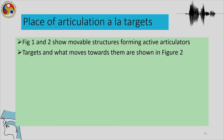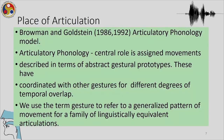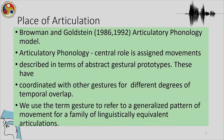Figures 1 and 2 show the movable structures forming active articulators and the target regions towards which they move. Now we want to present briefly the articulatory phonology model by Browman and Goldstein. In articulatory phonology, the central role is assigned to movements, described in terms of abstract gestural prototypes, which coordinate with other gestures for different degrees of overlap. We use the term 'gesture' to refer to a generalized pattern of movement.